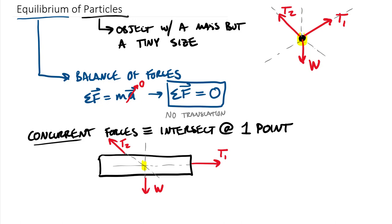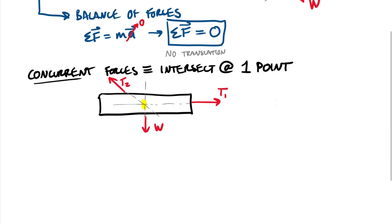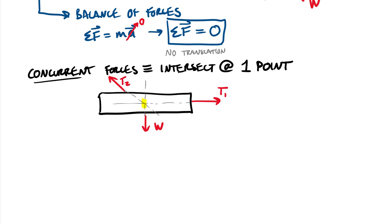So getting into solving this equation, sum of forces equals zero, there's a little bit of difference between two-dimensional problems and three-dimensional problems. So on two-dimensional problems, you'll use your sine and cosine, your right triangle trigonometry relationships, to find directions.